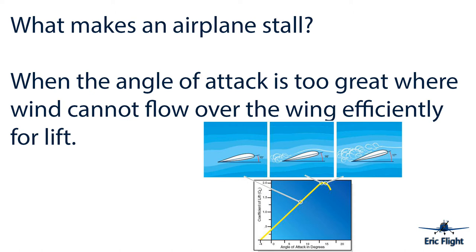If you look at the diagram on the screen right now — the angle of attack — there's this thing called the chord line, which is basically a horizontal line that lines up with the middle of the wing. That chord line determines the angle. It shows the angle of attack at about 10 degrees in the first diagram, and you'll notice that the wind is able to flow efficiently over the wing, so it creates lift.